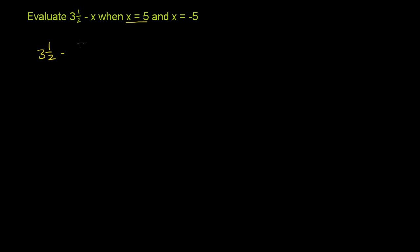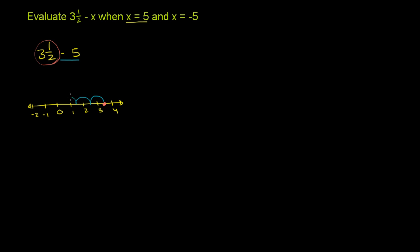It evaluates as 3½ minus 5 — instead of x, we have a 5. Let's draw a number line: 0, 1, 2, 3, 4, and some negative numbers: negative 1, negative 2. We're starting at 3½. Since we're subtracting a positive number, you can visualize that as stepping 5 to the left: 1, 2, 3, 4, 5. And it gets us to negative 1½. That is the answer: negative 1½.